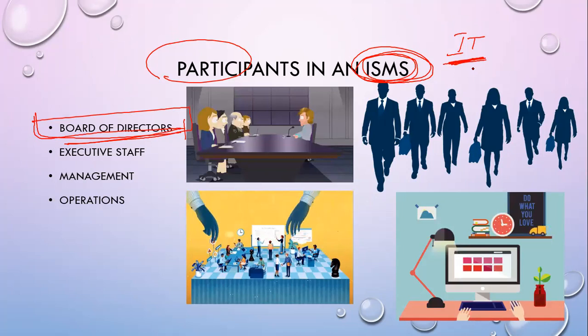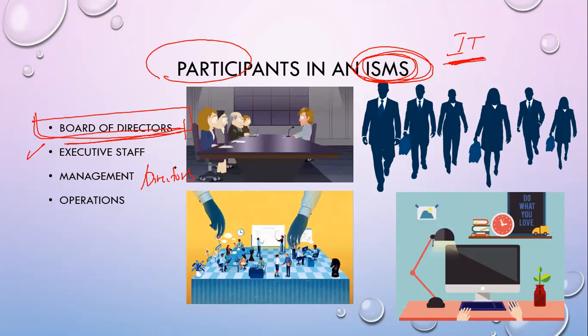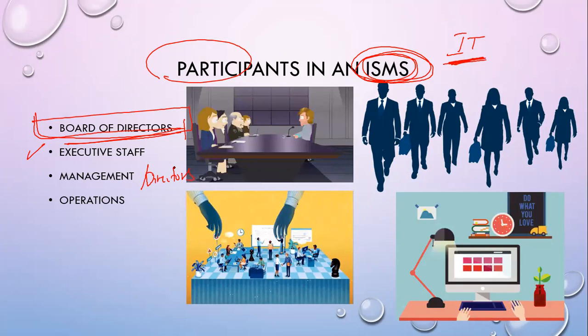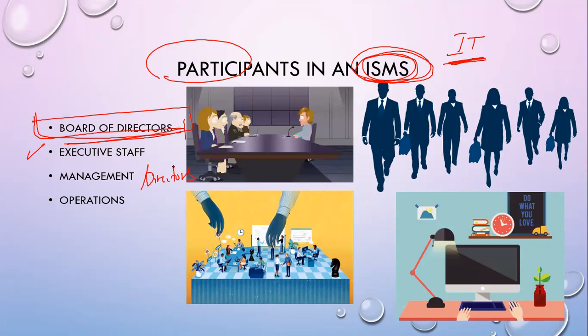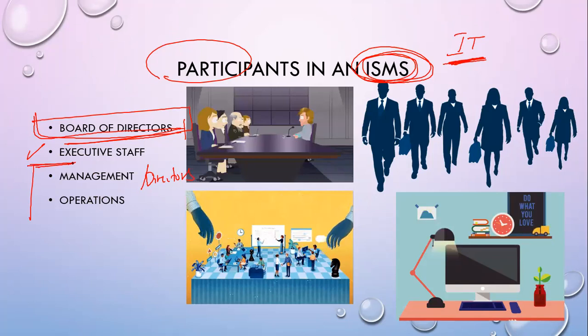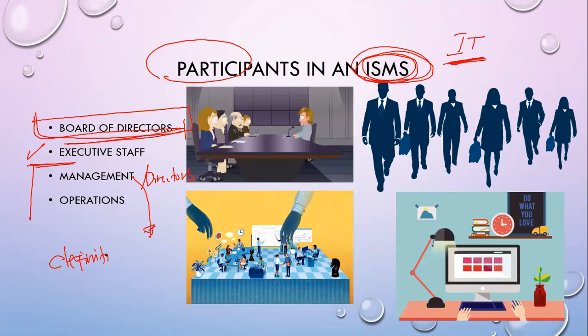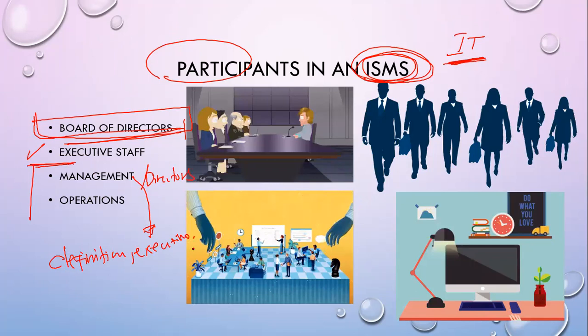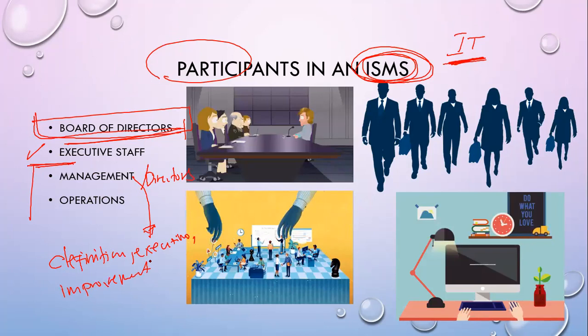Next is your management or directors. Your directors manage the tactics required to provide program services. In a process-based ISMS, program services are provided by a collection of complementary and integrated processes. Your directors participate through the definition, execution, and ongoing improvement of relevant information security processes. It is here where actions are starting — management participates by giving definition, leading the execution, and driving ongoing improvement on the system, including eradications, restorations, and innovations.